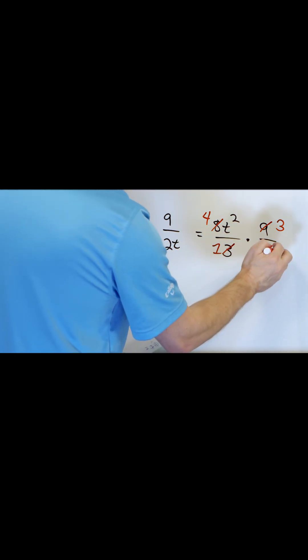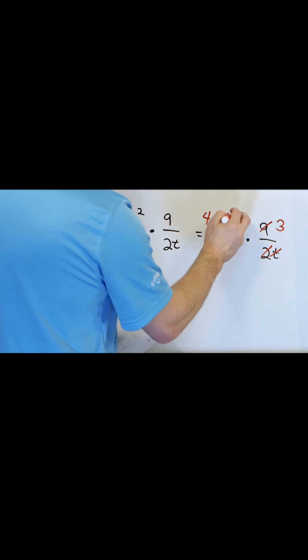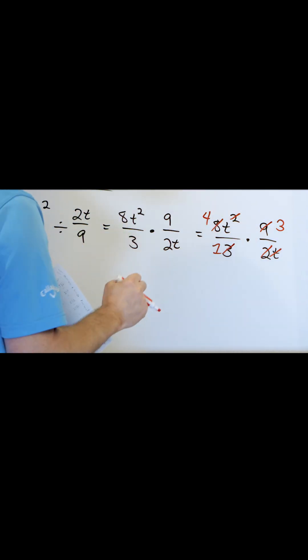And then we have a t² and a t. We can divide that by t and cancel it, leaving only 1t remaining. So we'll get closer to the final answer here. Over here we have 4t times 3, 4 times 3 is 12, times t.